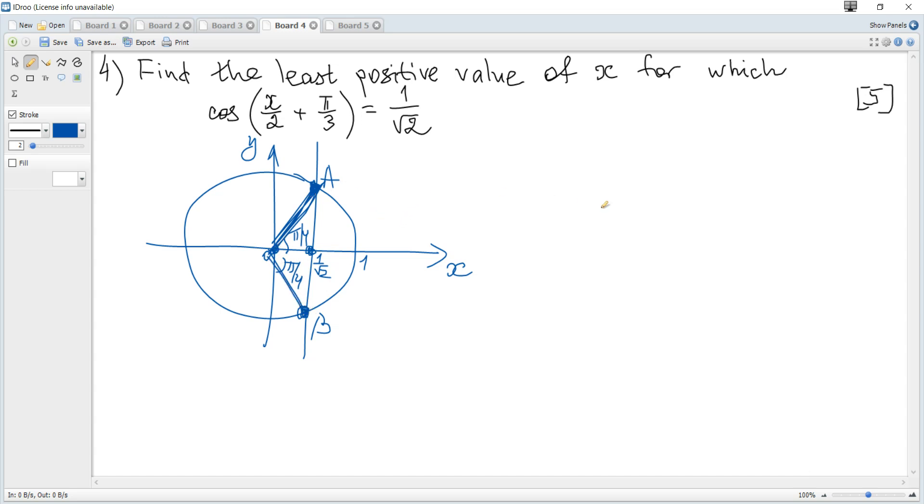I repeat, you consider cosine of some angle equal to this value, the absolute value of this number, so you take always plus, find this angle.